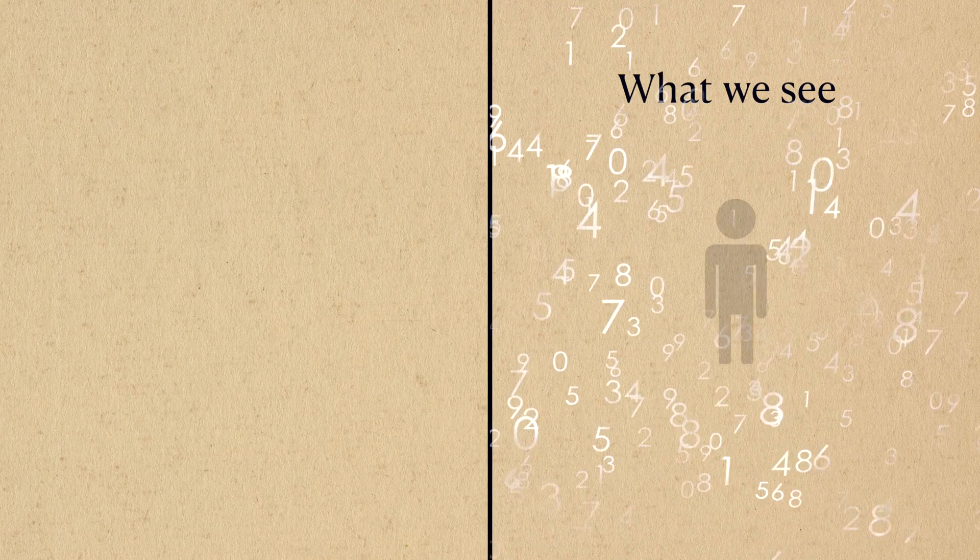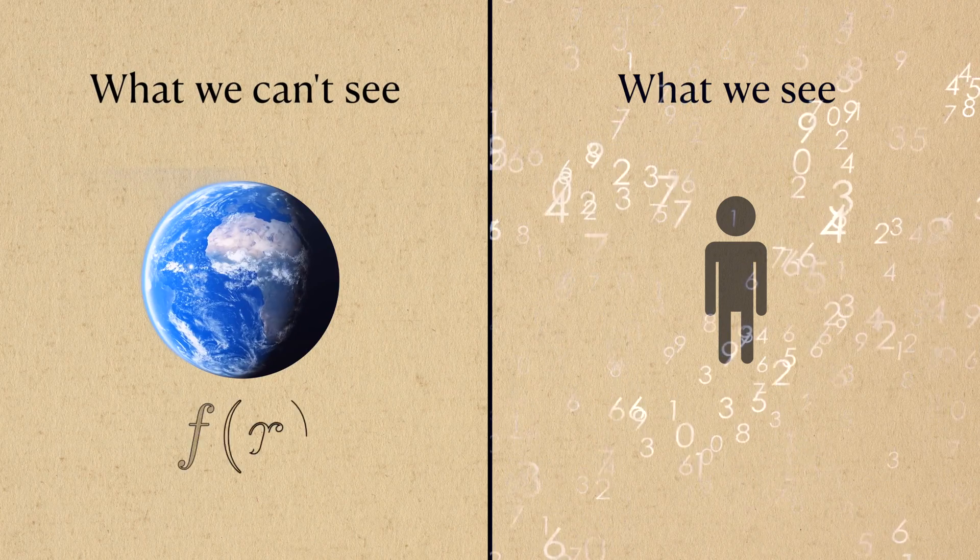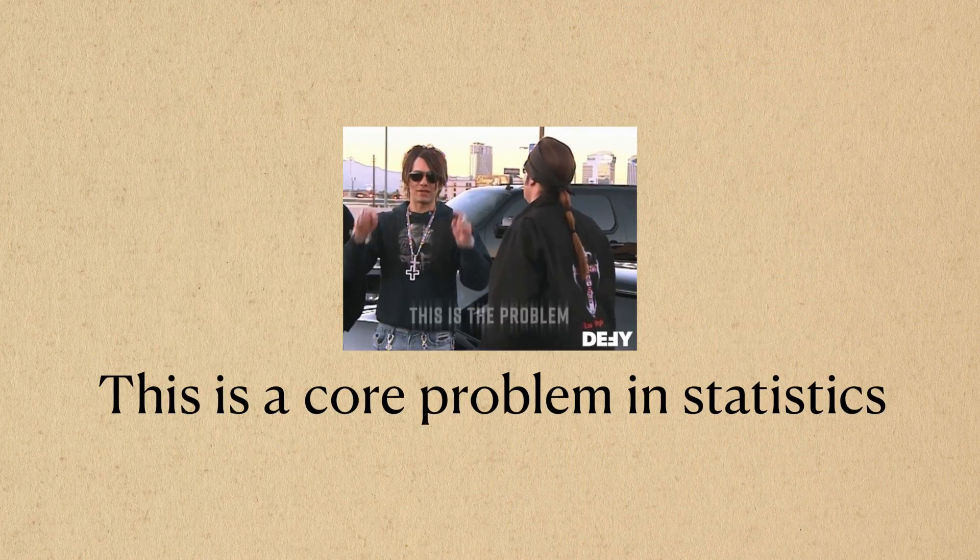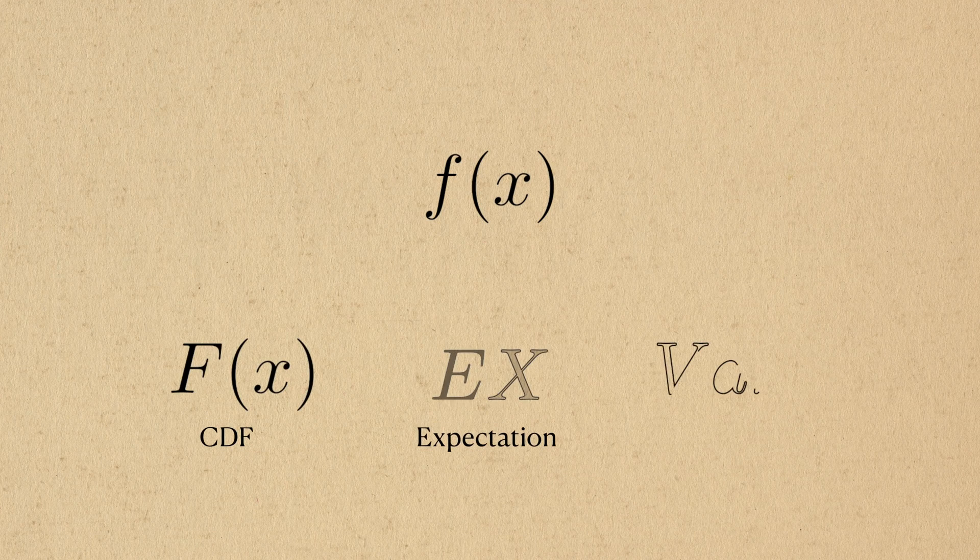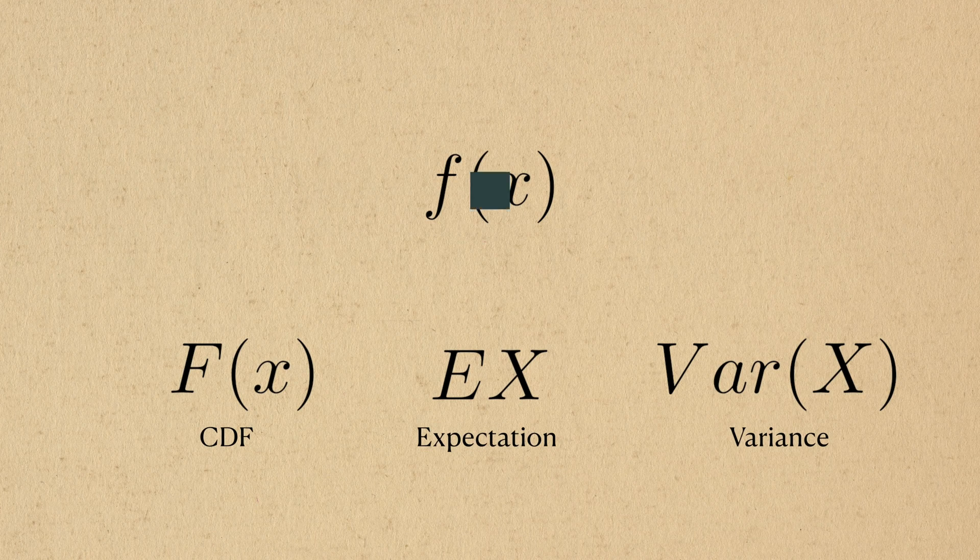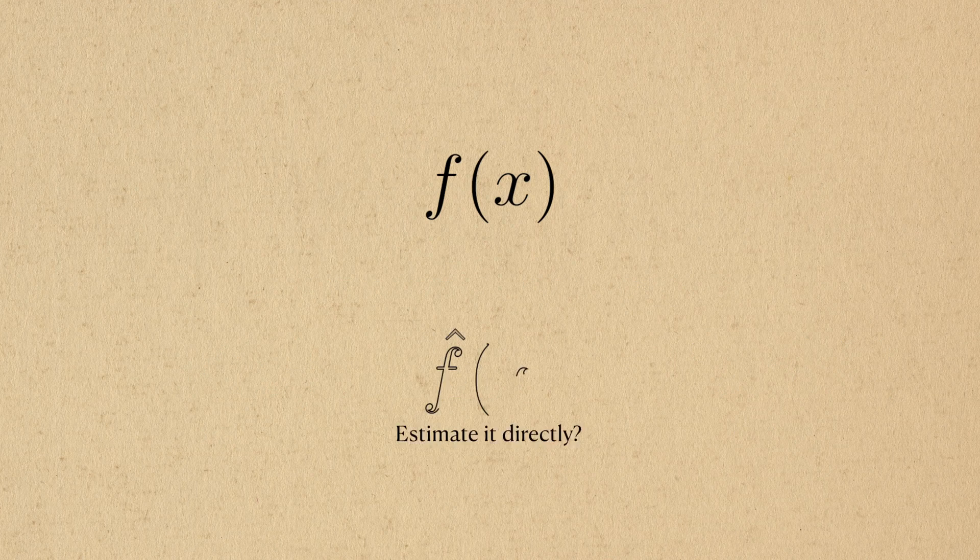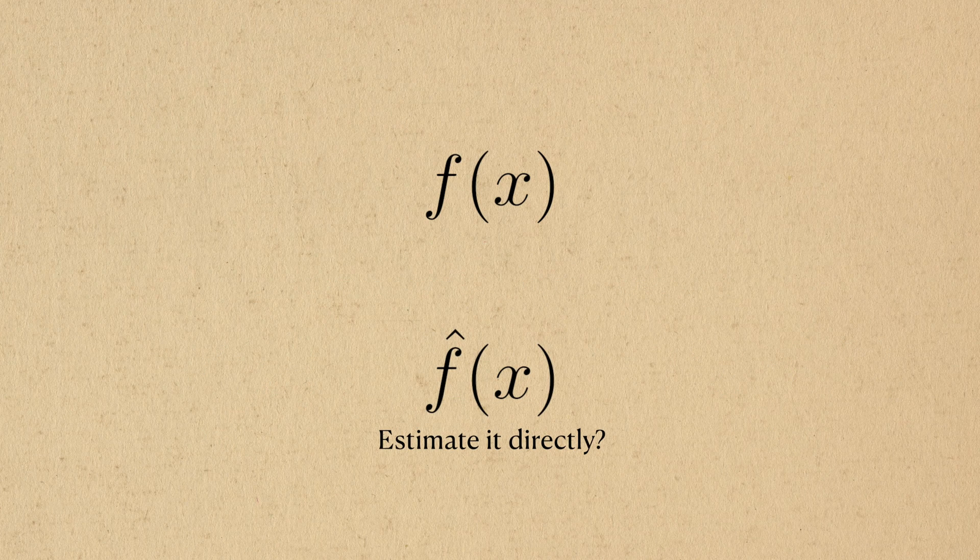From our perspective, we only ever see the data generated by the probability distribution, and never the distribution itself. This is a core problem in statistics. Knowing the probability distribution lets us derive many values of interest, but it's fundamentally unknowable. We can estimate the probability distribution, but this can be hard.